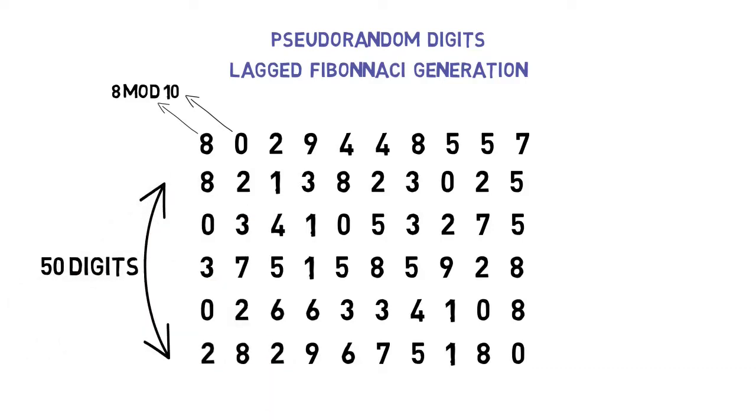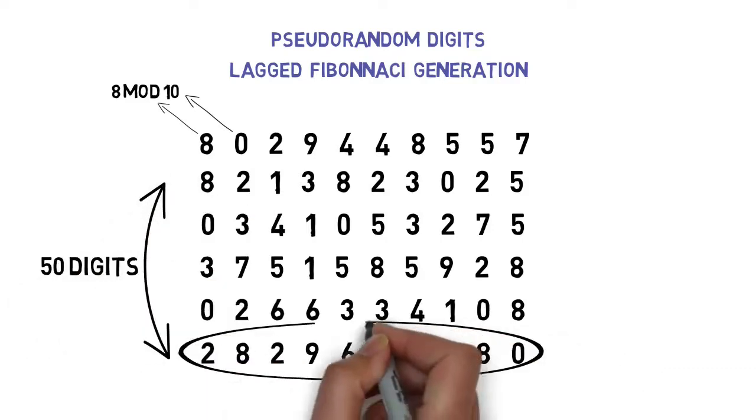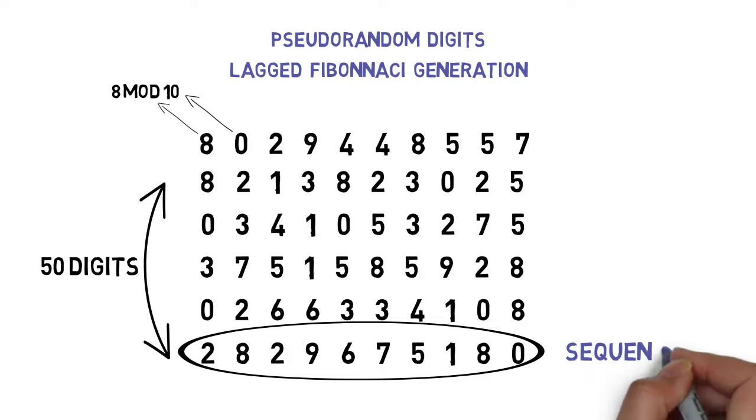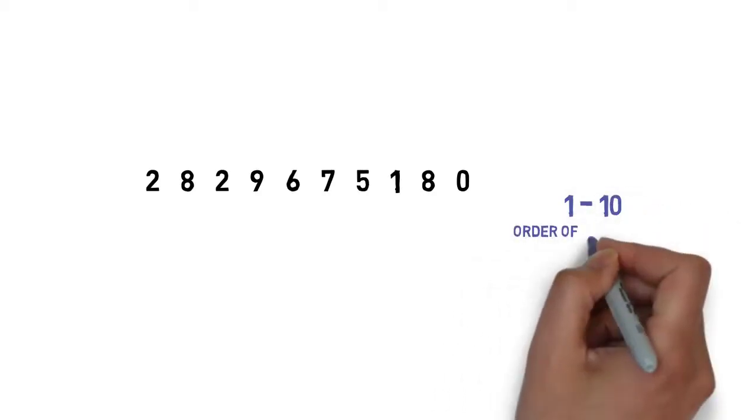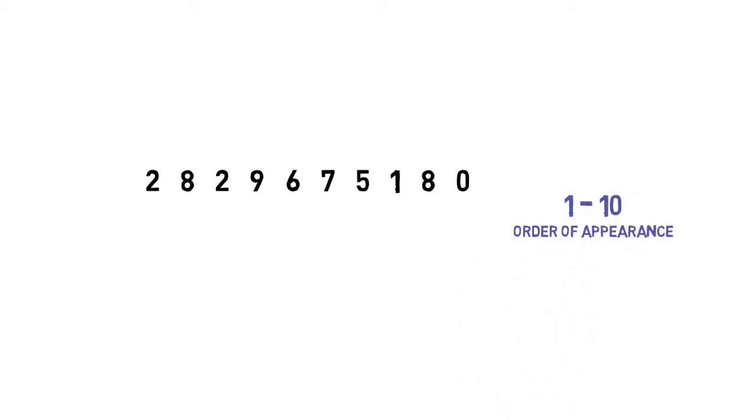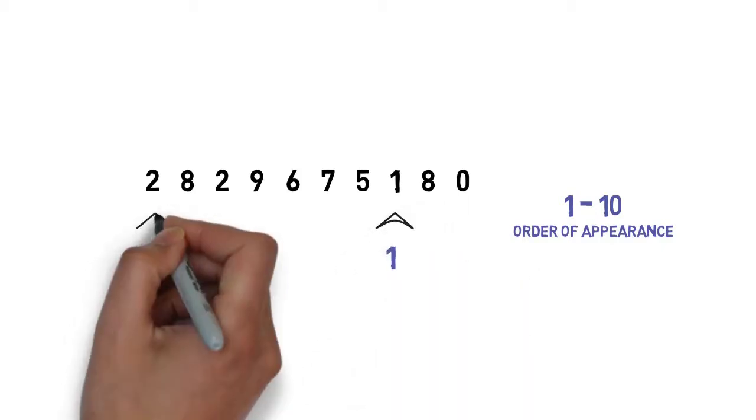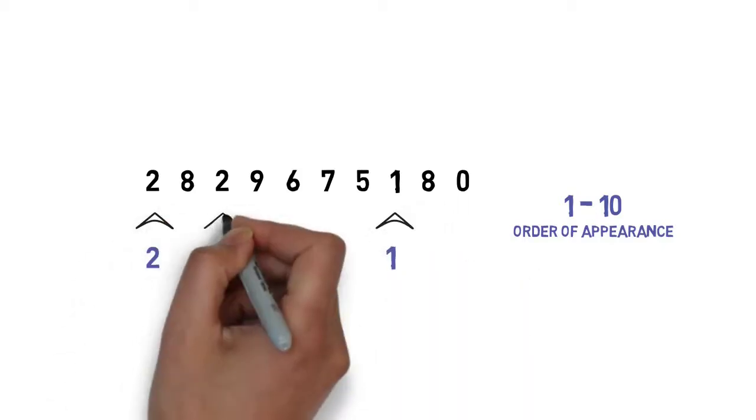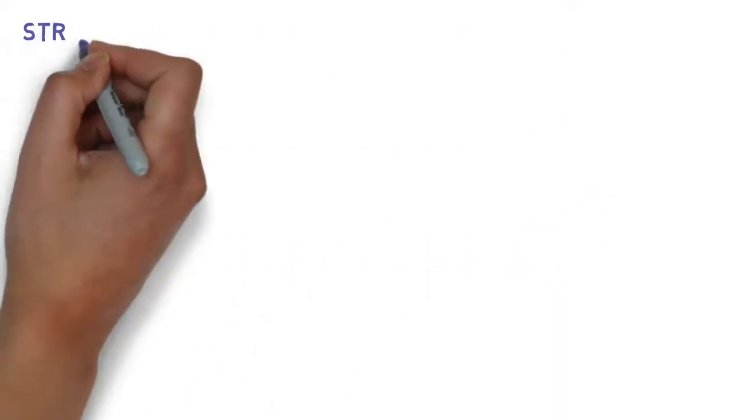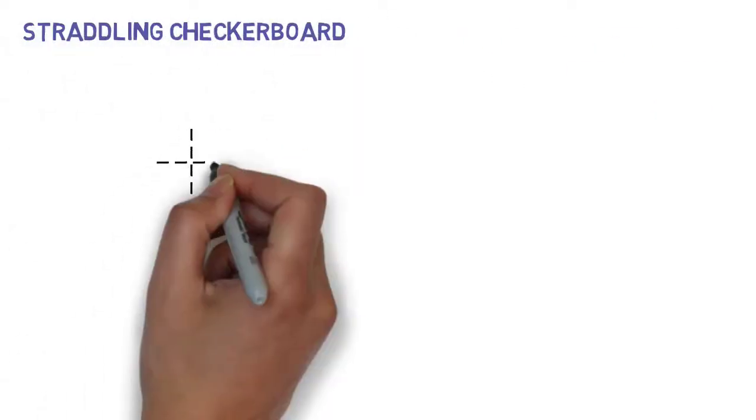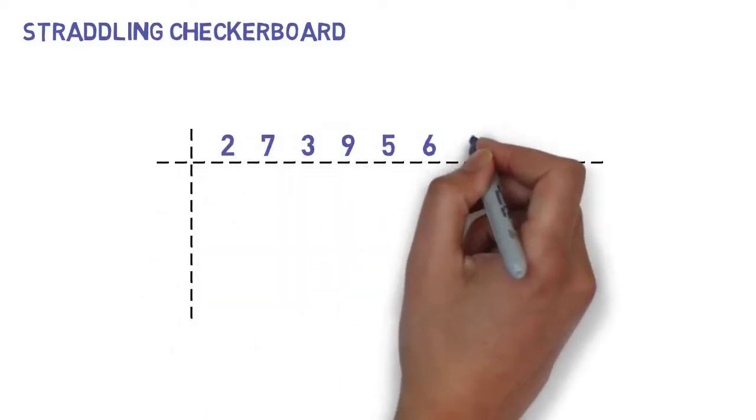We're going to use this last row of 10 digits in our final step, which is sequencing. That is to say that we're going to encode the sequence from 1 to 10, while taking into consideration the order of appearance. Our first number is 1. After that we have two twos, so I'll order them by appearance, and so on. This final sequence of numbers represents the top row of numbers of our straddling checkerboard.